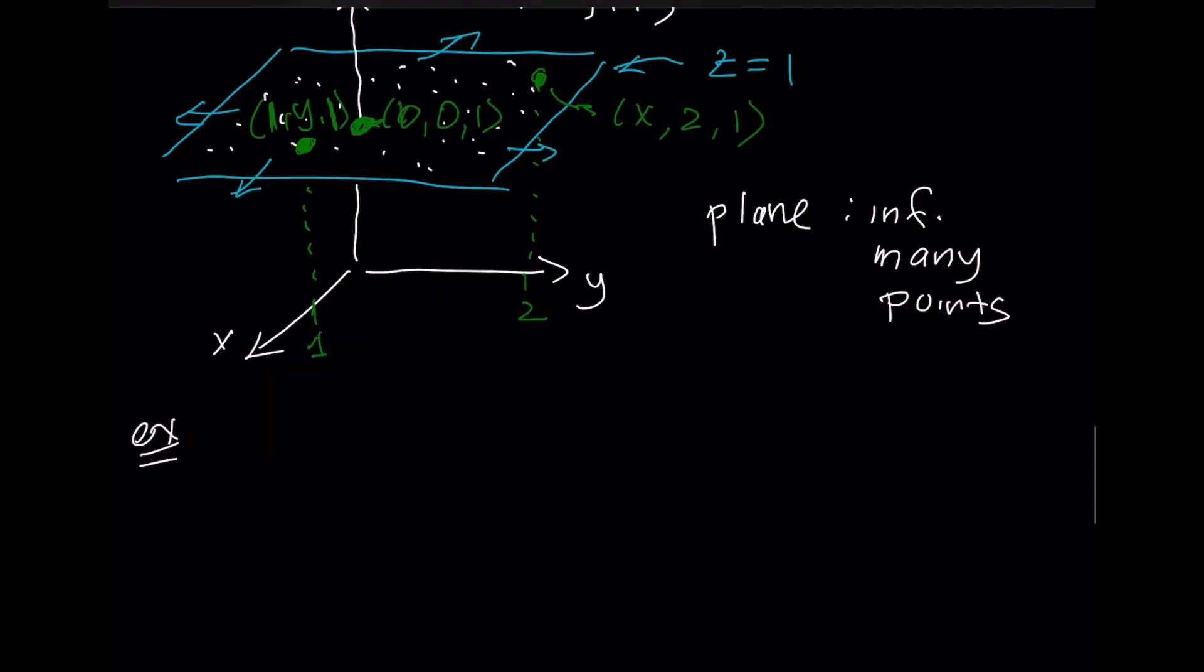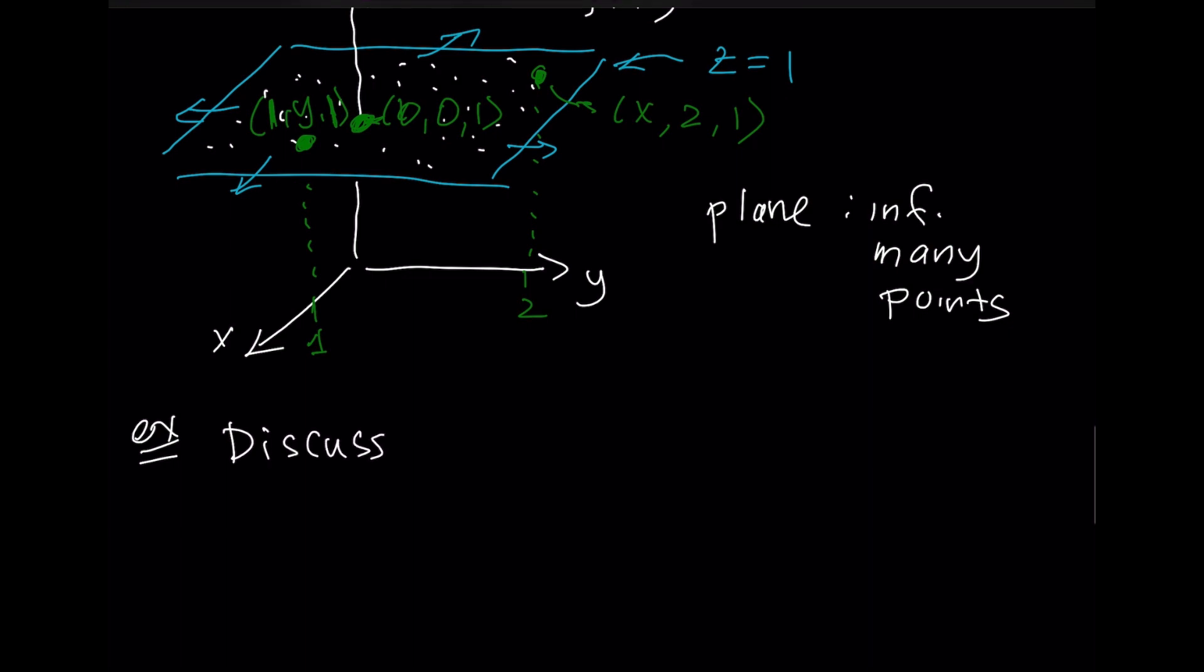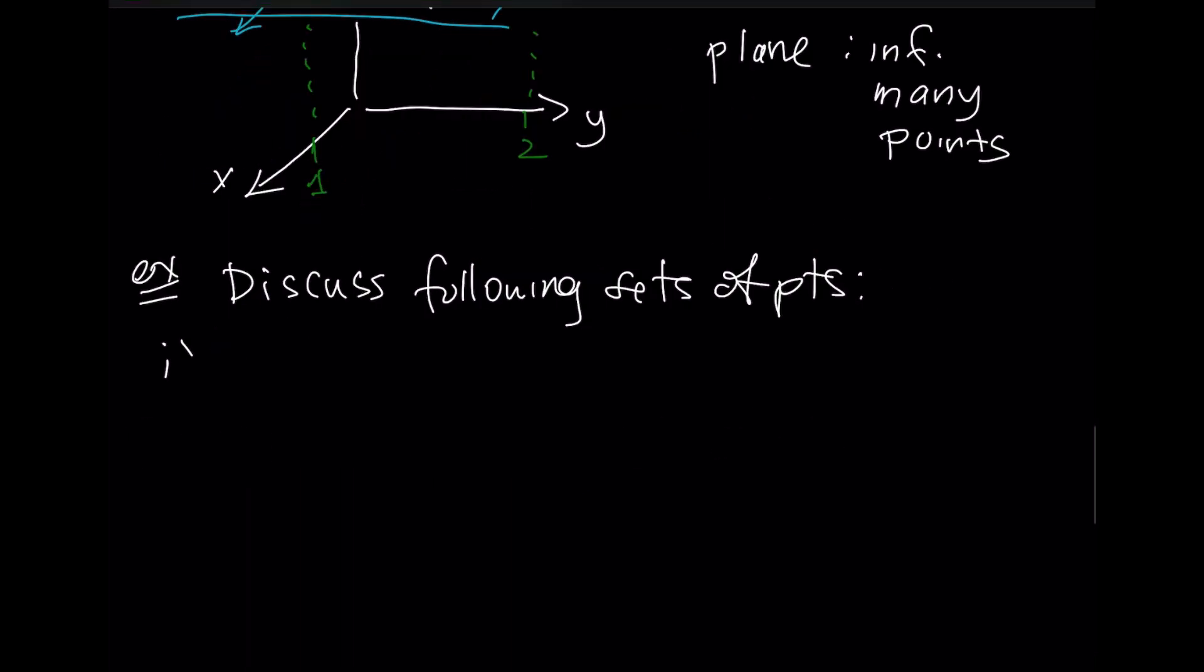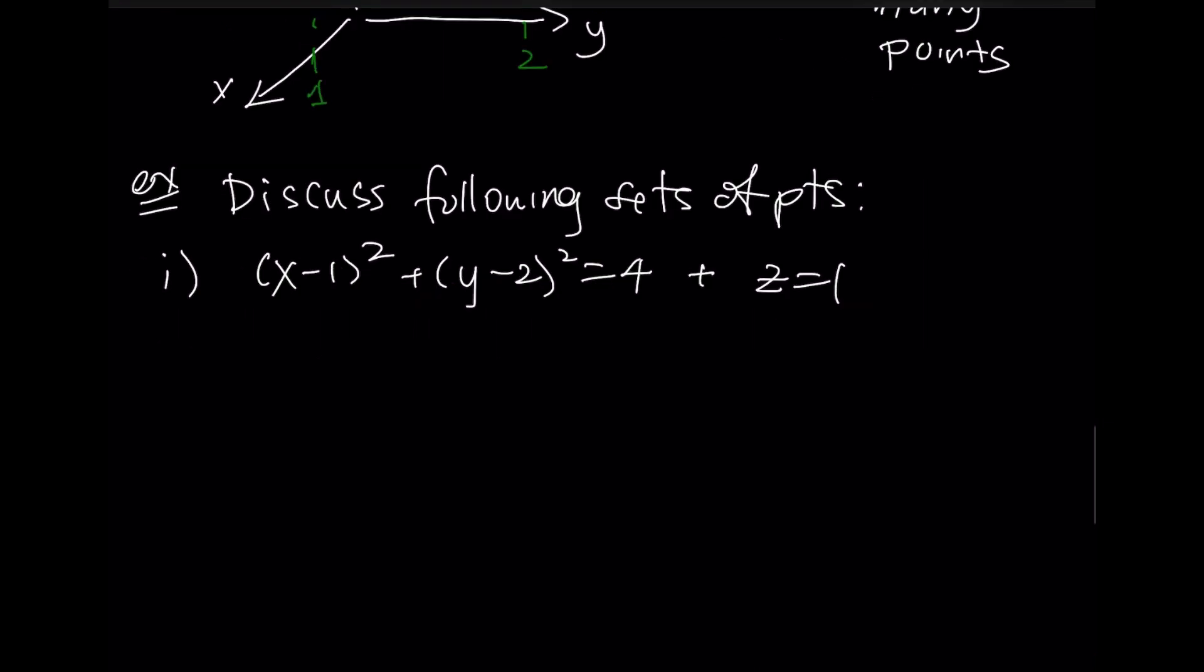We're going to extend this idea of geometry. We're going to discuss the following sets of points. In this first one, it's going to be a bit of an extension of what I talked about a little earlier. We've already talked about this z equals 1. This looks familiar. This looks like a circle that has a radius of 2 and a center of 1 and 2.